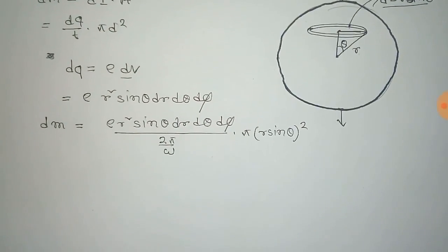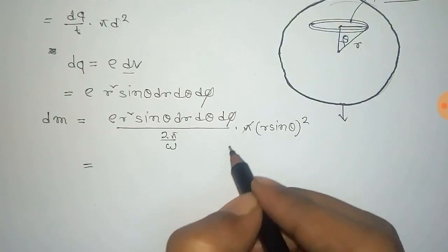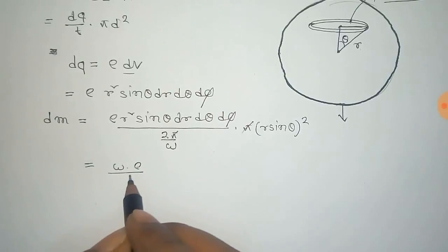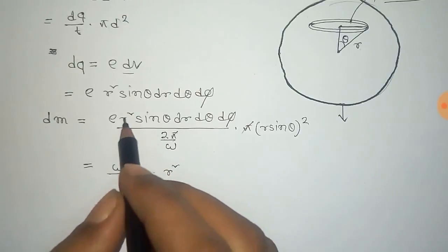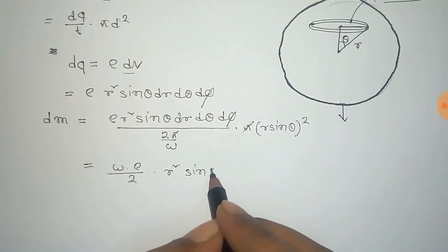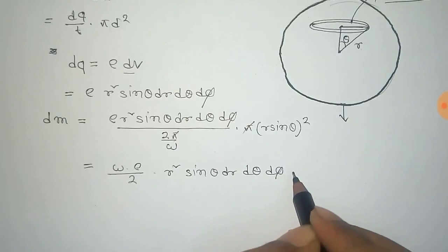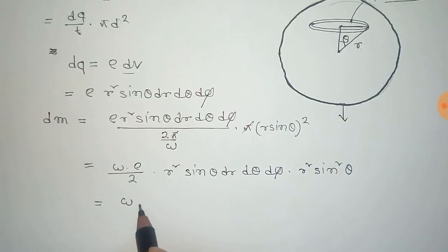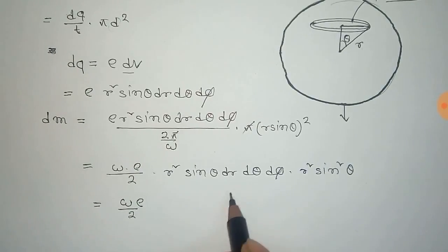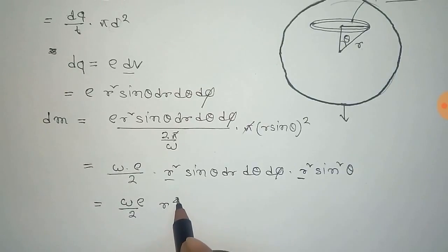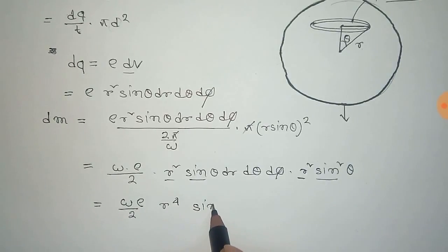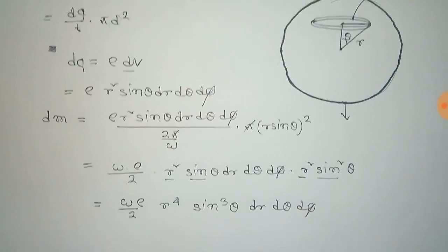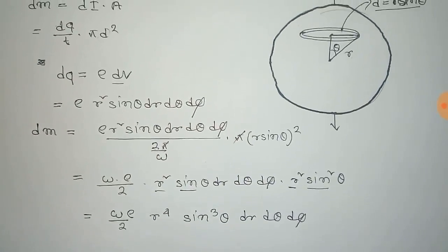After substituting, the pi terms cancel out, and we get dM equal to omega rho by 2. Here, omega is the angular velocity with which the sphere is rotating along the z-axis. This gives dM equal to omega rho by 2 into r to the power 4 and sine cubed theta, into the remaining dI d theta d phi.